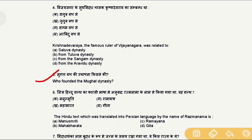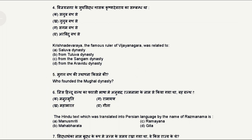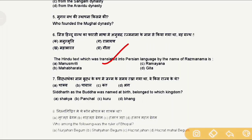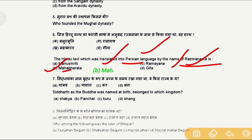Question 5: Who founded the Mughal dynasty? The answer is Babur in 1526. Question 6: The Hindu text translated into Persian by the name Razmnama is which text? The correct answer is option B, the Mahabharata. Akbar had the Mahabharata translated into Persian, and it was named Razmnama, which means the Book of War.